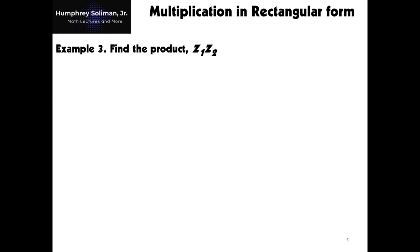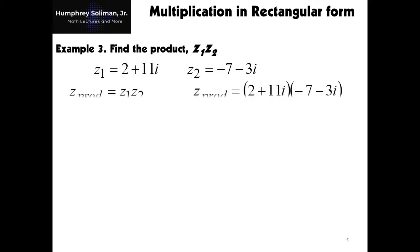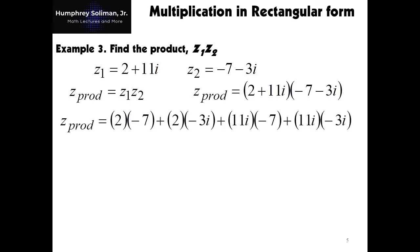Let's now proceed to multiplication of complex numbers using the rectangular form. We have here example number 3. We have the same given as examples 1 and 2: z1 equals 2 plus 11i, and z2 equals negative 7 minus 3i. We will call the product of z1 and z2 as z prod. Multiplying complex numbers is the same as multiplying binomials in algebra, so we can use the FOIL method.